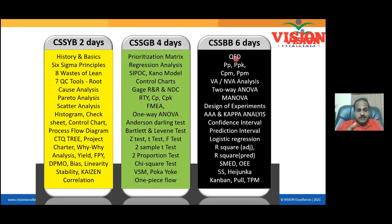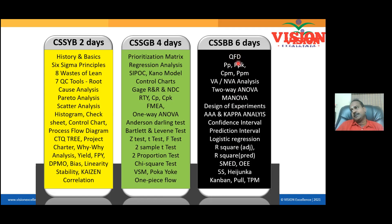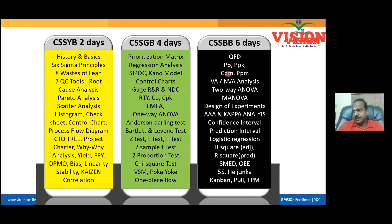Quality Function Deployment converts customer requirements into appropriate technical specifications. You may know Cp and Cpk, which are process capability indices, but Pp and Ppk can give you a more realistic picture of process performance. There are also advanced tools like Cpm, PPM, MANOVA, and Kappa analysis, but you don't have to worry about everything at the initial stage.